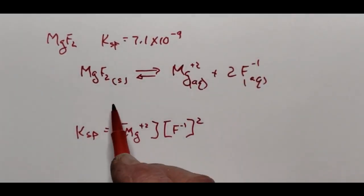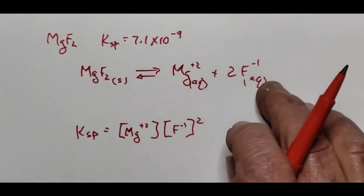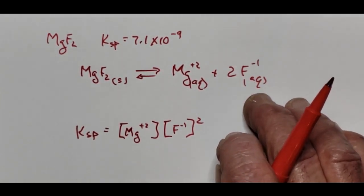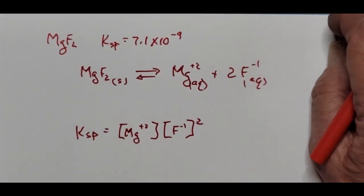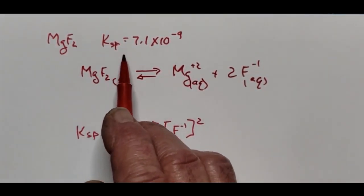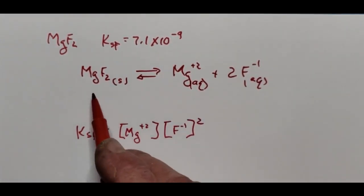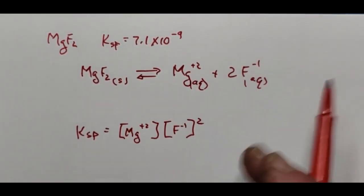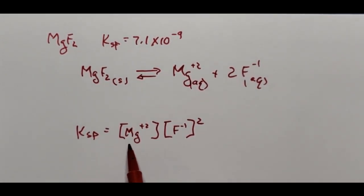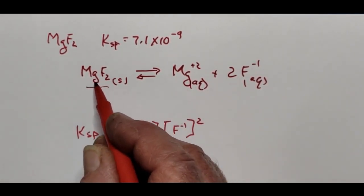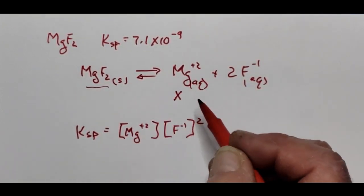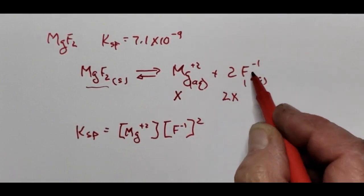This type of problem, where we're given the Ksp and asked for the solubility, is like problems four and five on your pre-lab. Magnesium fluoride has a Ksp of 7.1 × 10⁻⁹ — very small. It equilibrates to give magnesium ions and twice as many fluoride ions. Its Ksp expression is the magnesium molarity times the fluoride molarity squared. For every x moles of MgF₂ that dissolves, we get x magnesium ions and 2x fluoride ions.